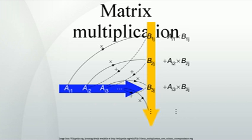Like vectors, matrices of any size can be multiplied by scalars, which amounts to multiplying every entry of the matrix by the same number. Similar to the entry-wise definition of adding or subtracting matrices, multiplication of two matrices of the same size can be defined by multiplying the corresponding entries, and this is known as the Hadamard product. Another definition is the Kronecker product of two matrices, to obtain a block matrix. One can form many other definitions. However, the most useful definition can be motivated by linear equations and linear transformations on vectors, which have numerous applications in applied mathematics, physics, and engineering. This definition is often called the matrix product.